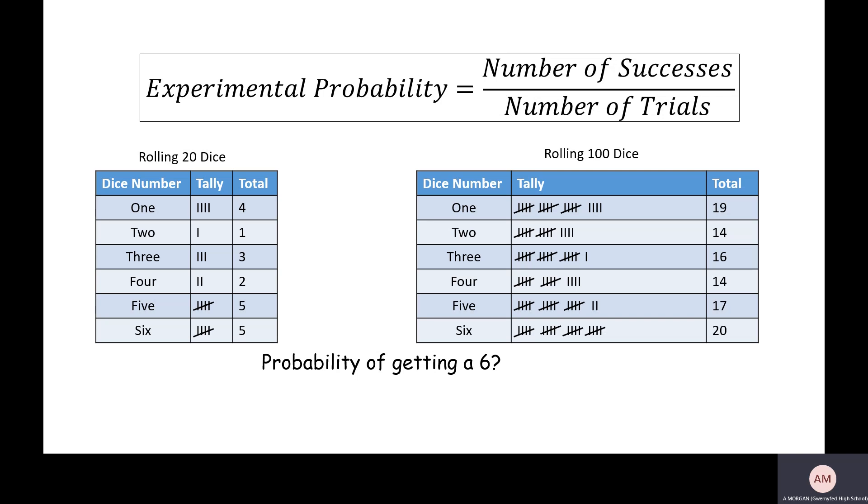So when we rolled it 20 times, successes is in this case number of sixes, and number of trials is how many times we rolled the dice. So 5 over 20 because we got 5 sixes out of 20 dice rolls. And on the right we got 20 out of 100, 20 sixes out of 100 dice rolls.